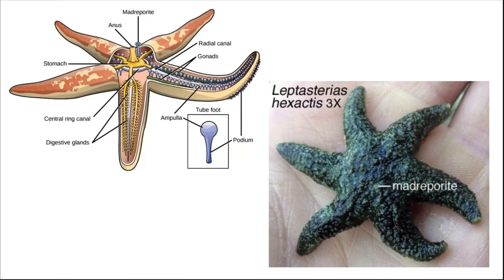Echinoderms appear as though they have radial symmetry, but they actually don't. You can see that the madreporite is on one side of the sea star. You can think of the madreporite as being placed along the axis of its bilateral symmetry.